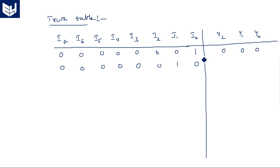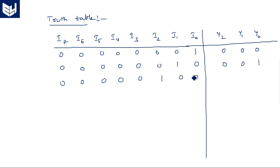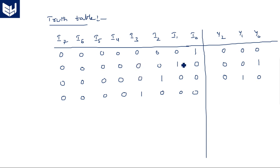When the first pin I1 is activated out of all the input lines, the corresponding binary equivalent is 0 0 1. Similarly, when the second pin I2 is activated, the corresponding binary equivalent is 0 1 0. And when the third pin I3 is activated, its corresponding binary representation is 0 1 1.